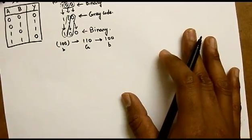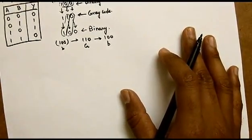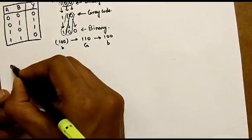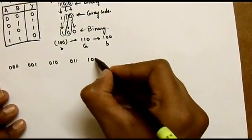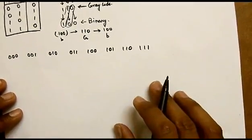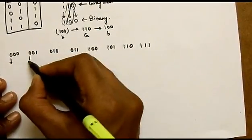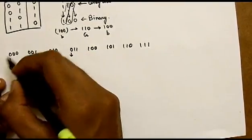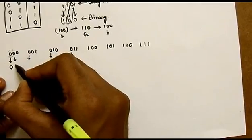Now I would like you to take a pen and paper and do the conversion along with me. Let us do conversion for a set of binary numbers: 0, 0, 1, 0, 1, 0, 0, 1, 1, 1, 0, 1, 1, 0, 1, 1, 1, 1. These are the normal binary numbers. We will now convert them to gray code. MSB is always the same, so for binary to gray we XOR horizontally. 0 and 0 XOR is 0.